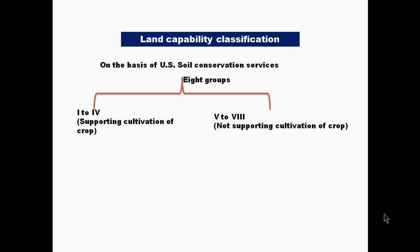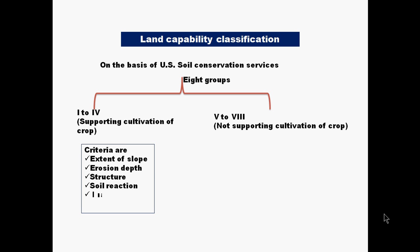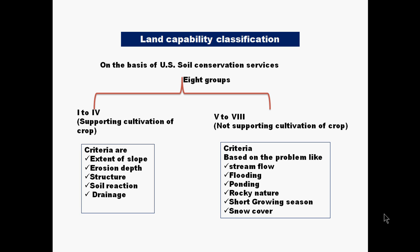The criteria for groups one to four include extent of slope, erosion, depth, soil structure, soil reaction, and drainage. For groups five to eight, the limiting factors are problems like flooding, ponding, rocky nature, and short growing season or snow cover — which is why these groups cannot support regular crop cultivation, except for some pasture management. For more details on land capability classification, refer to the previous dedicated video on this topic.